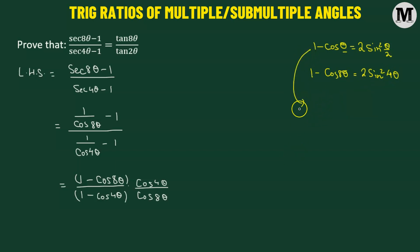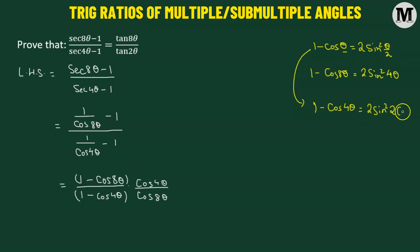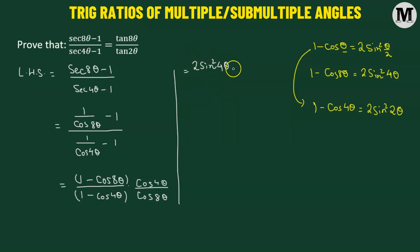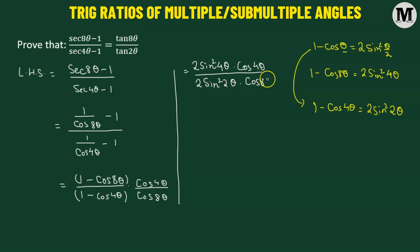Similarly, for 1 minus cosine 4θ, we multiply θ by 4, giving 2 sine squared(4θ/2) = 2 sine squared 2θ. Now our expression becomes 2 sine squared 4θ multiplied by cosine 4θ, divided by 2 sine squared 2θ multiplied by cosine 8θ.